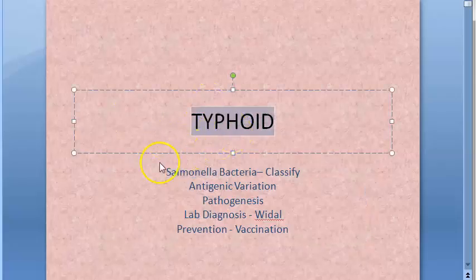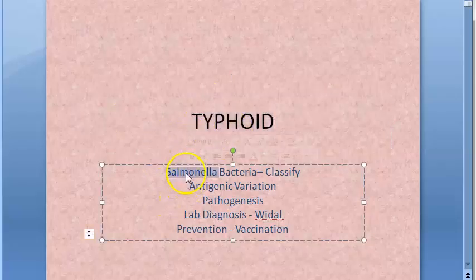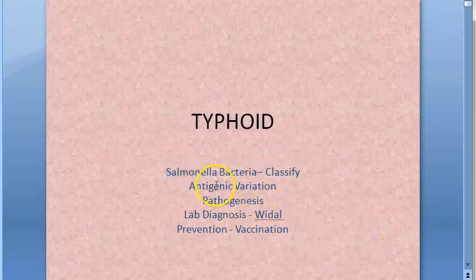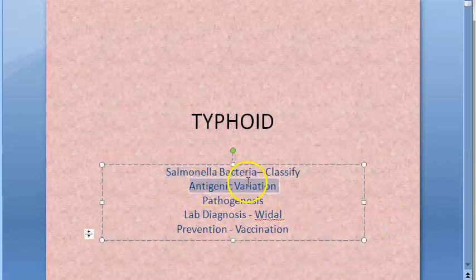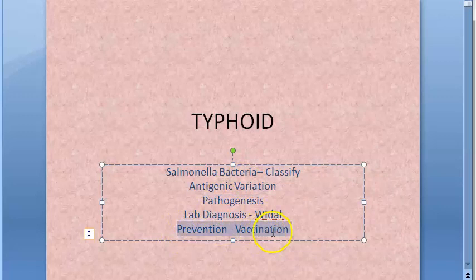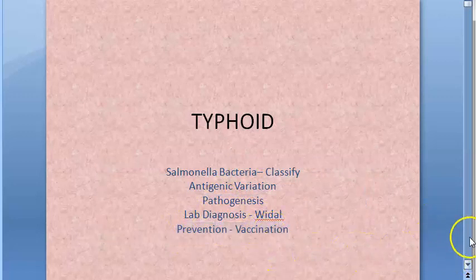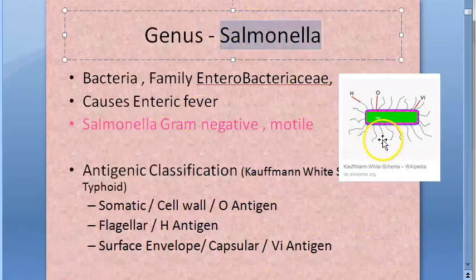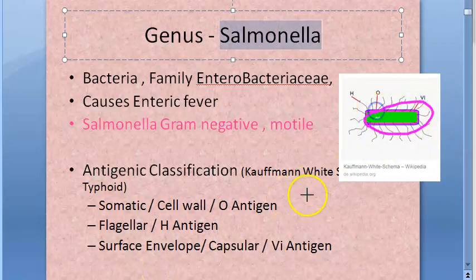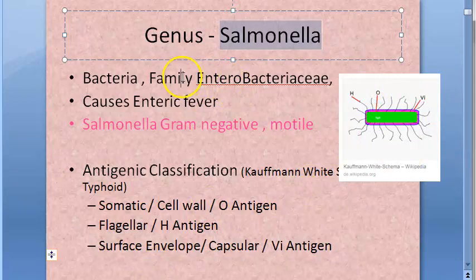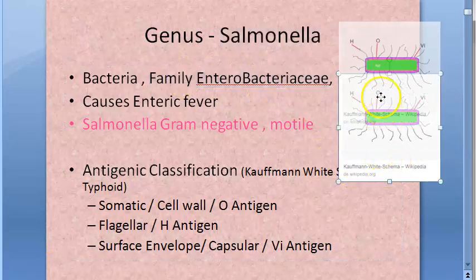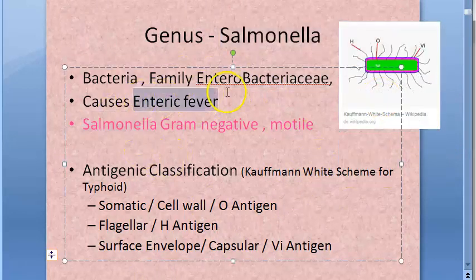Let us look at typhoid today. Typhoid is caused by Salmonella bacteria. We will be looking at the bacteria, the classification, antigenic variation, pathogenesis, lab diagnosis especially the Widal test, and how to prevent typhoid. Salmonella is a Gram-negative bacteria — you can see it is pink here — and it belongs to the family Enterobacteriaceae. It causes enteric fever.